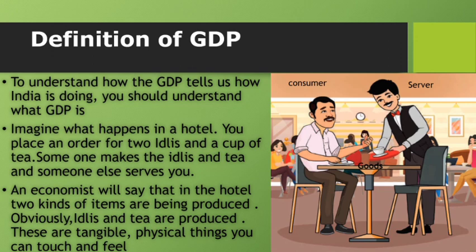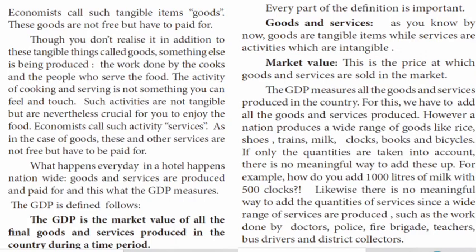Before we begin, you should understand what GDP is. Imagine you are at a hotel eating idli and a cup of tea. Someone makes the idli and tea for you, and someone else serves you. In economics, the idli and tea that are produced are tangible items — that means they are physical things you can touch and feel.